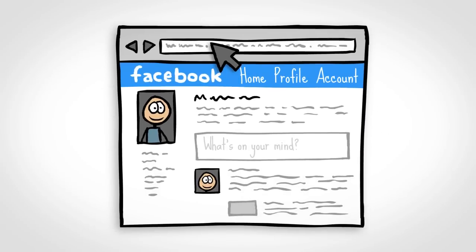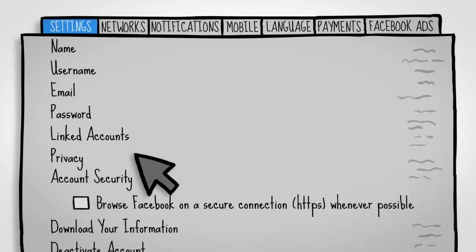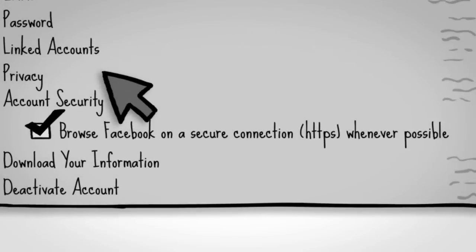You can also secure your Facebook activity. From your Facebook page, go to Account, Account Settings, and then Account Security. Now turn on Secure Browsing.